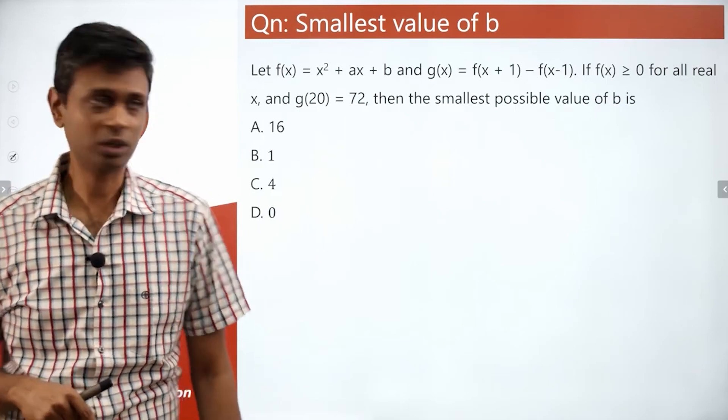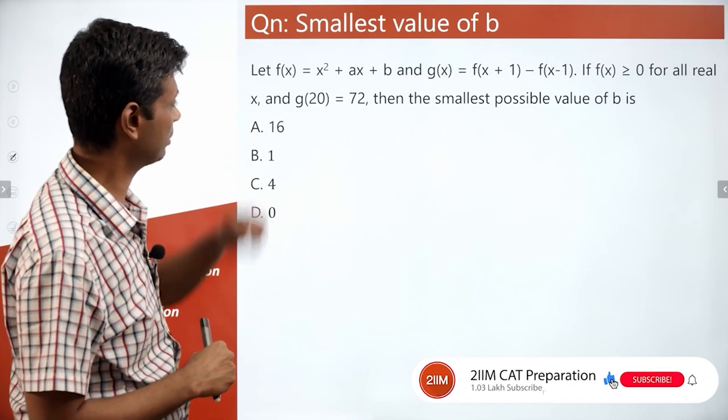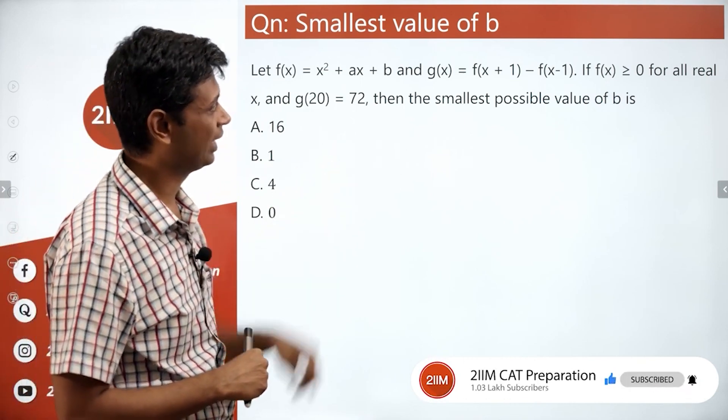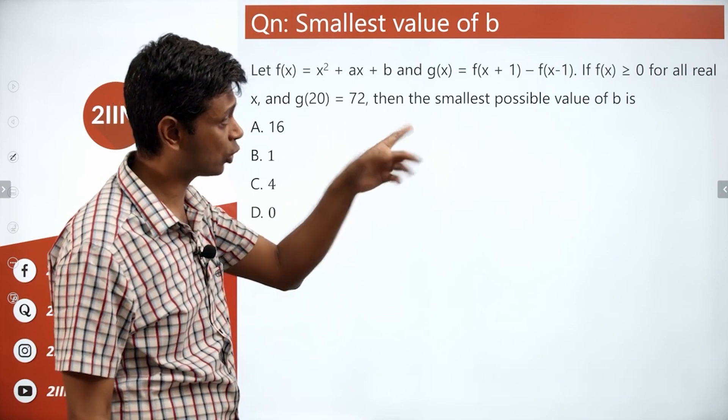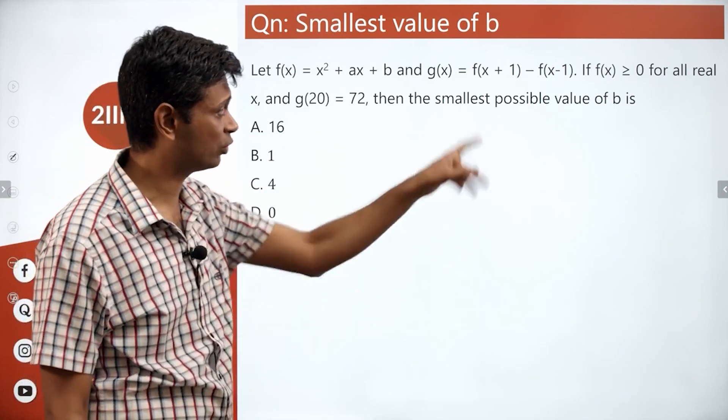There is one question on functions. Let's look at this. f(x) = x² + ax + b, and g(x) = f(x+1) - f(x-1). If f(x) ≥ 0 for all real x and g(20) = 72, then find the smallest possible value of b. This is a brilliant starting point.